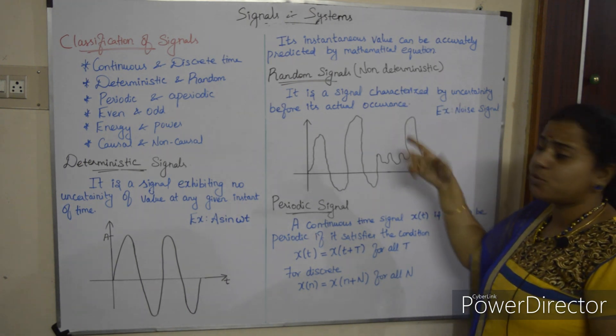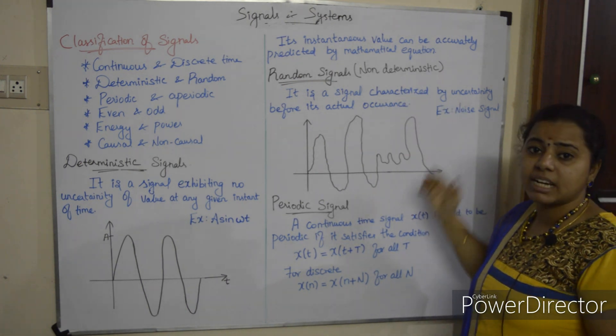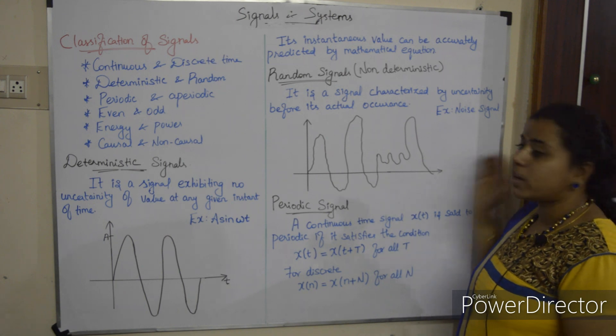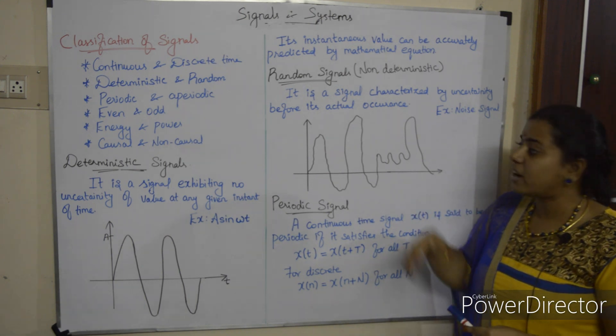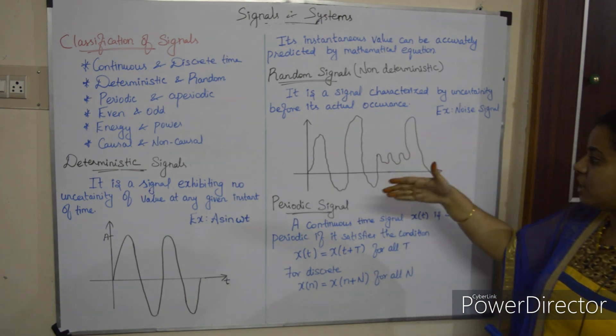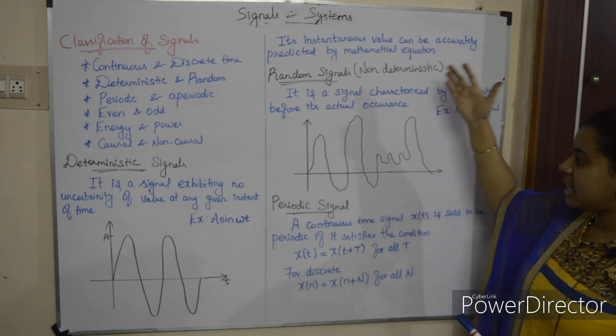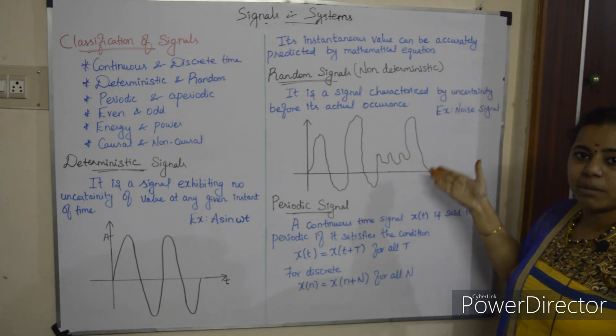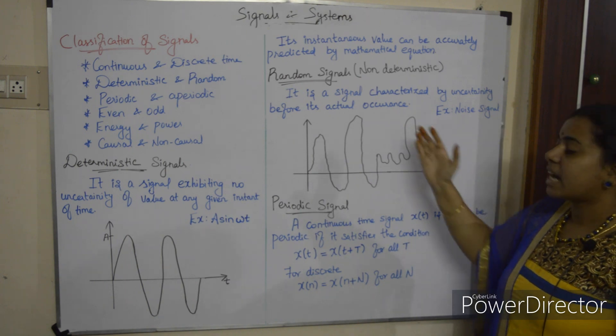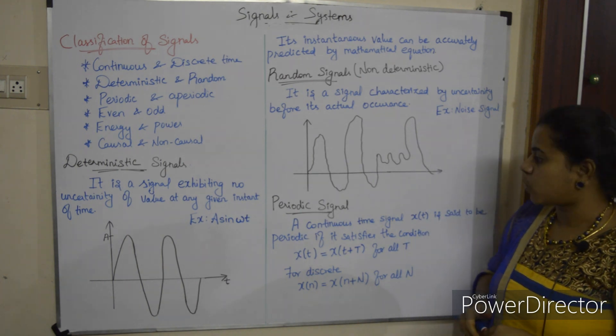The best example of a random signal is a noise signal. A noise signal is a random signal.